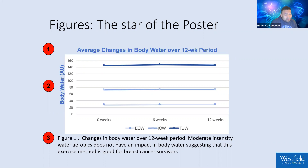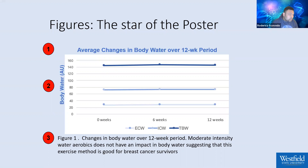The last component is the figure legend, which is probably the most complicated one because we tend to either put nothing in there or we put everything. We need to find a happy median. Usually it's just one or two sentences describing the method required to make the figure, or it describes the key finding — the major result. Looking at this graph, the lines are flat over the 12-week period, so the legend should say that moderate water aerobics does not have an impact on body water, which is our major finding.